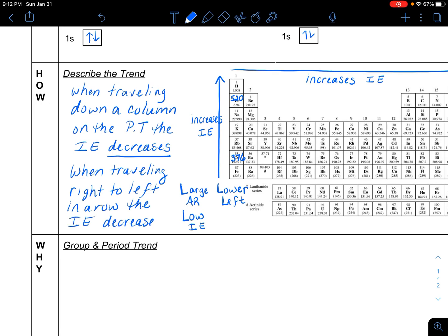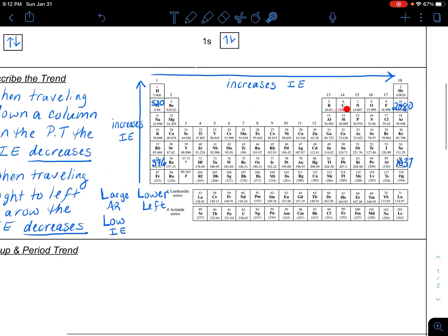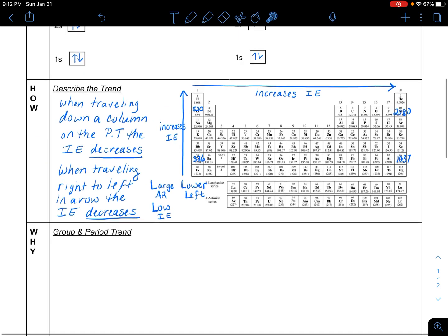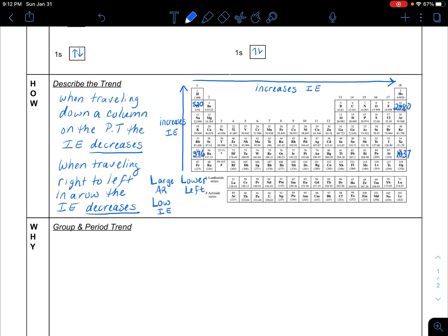Now if that bothers you, you could just kind of what's called negate the whole sentence. When traveling up a column on the periodic table, the ionization energy increases. So if you'd like to say this way, and maybe you want both sentences, as you travel up the column or the group, it gets larger. And as you travel, instead of right to left, you'd say as you travel left to right, then the ionization energy increases. So if you'd like to do that, that's fine. I just wanted my little sentence to kind of match what I have down here in that little bubble right there.